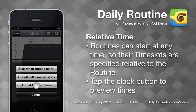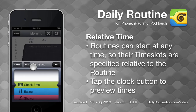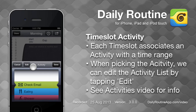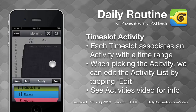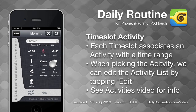Note that time slots' start and end times are relative to the routine's start time. We want this first time slot to start when the routine starts, so tap Start When Routine Starts. We then pick an activity. For info on activities, see the Creating and Editing Activities video. Tap Done, and the new time slot appears in the routine.